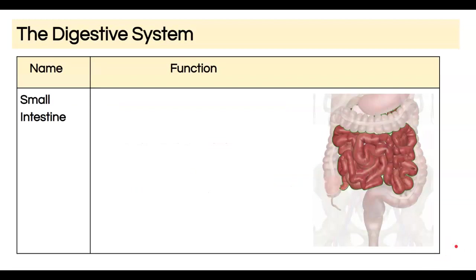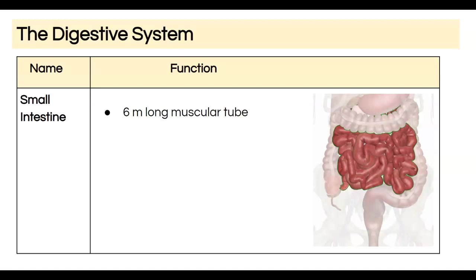Food moves from the stomach into the small intestine, which is about six meters long. To put that in perspective, one meter is roughly three feet, so six meters is about 18 feet — if you counted 18 steps from a starting point, that would be how long your small intestine is, which is remarkable.